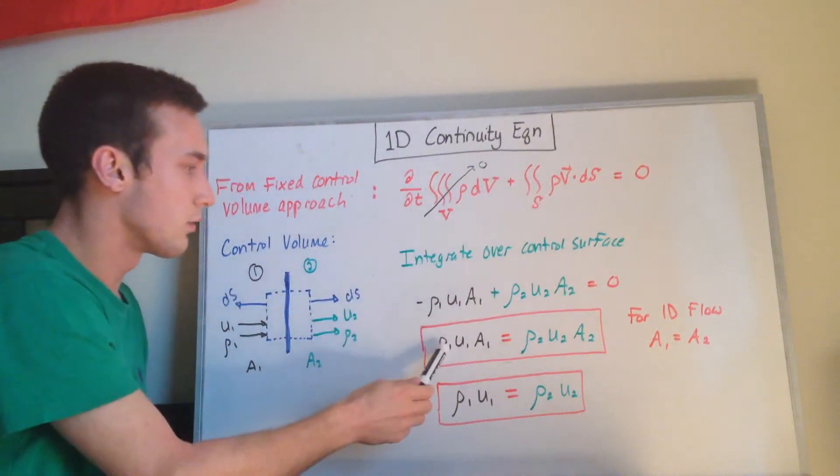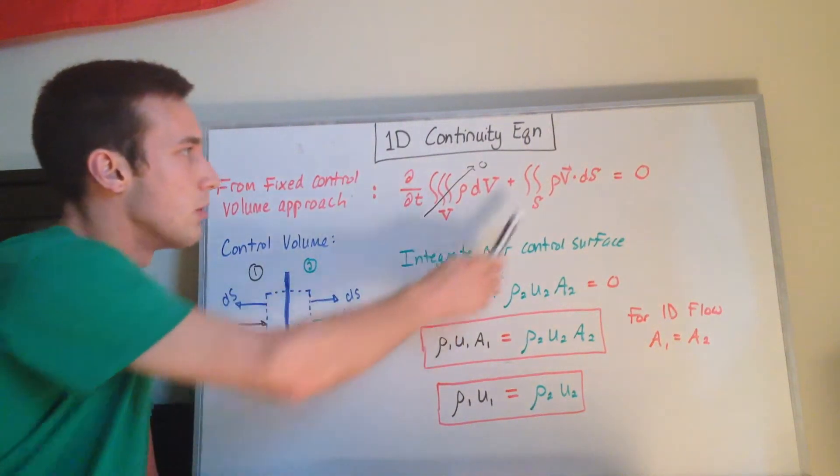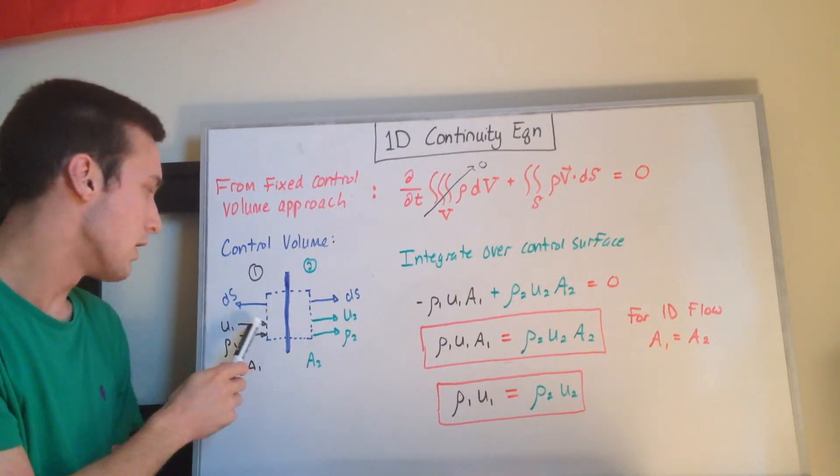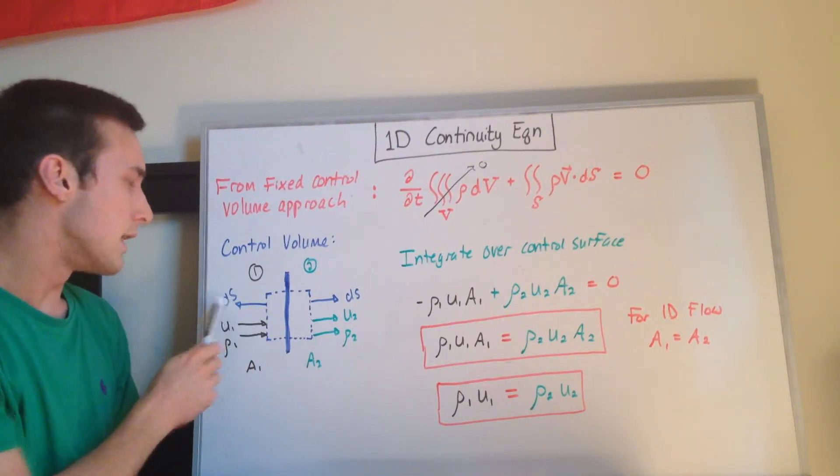and then we want v·ds, which is the velocity dotted with the differential surface area. So we want u1 dotted with ds.